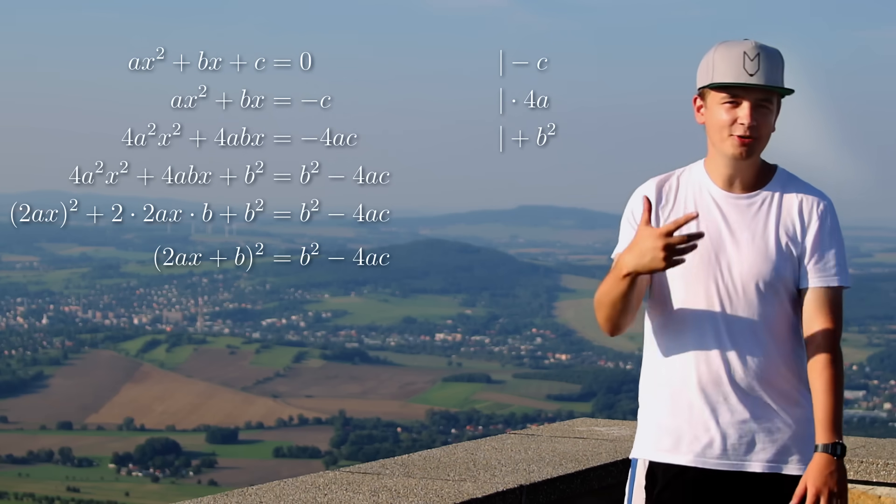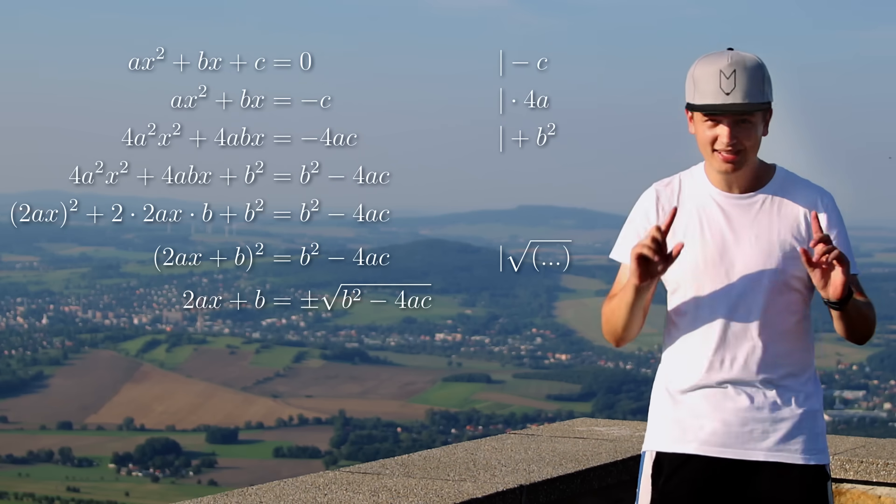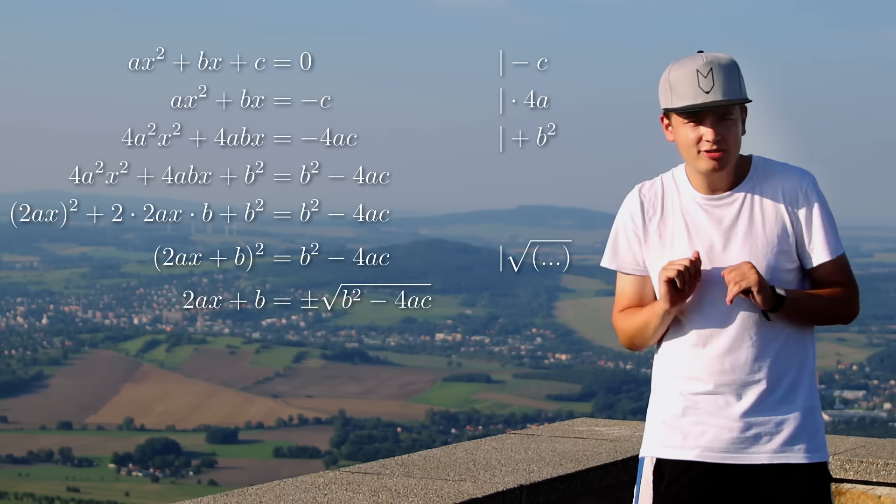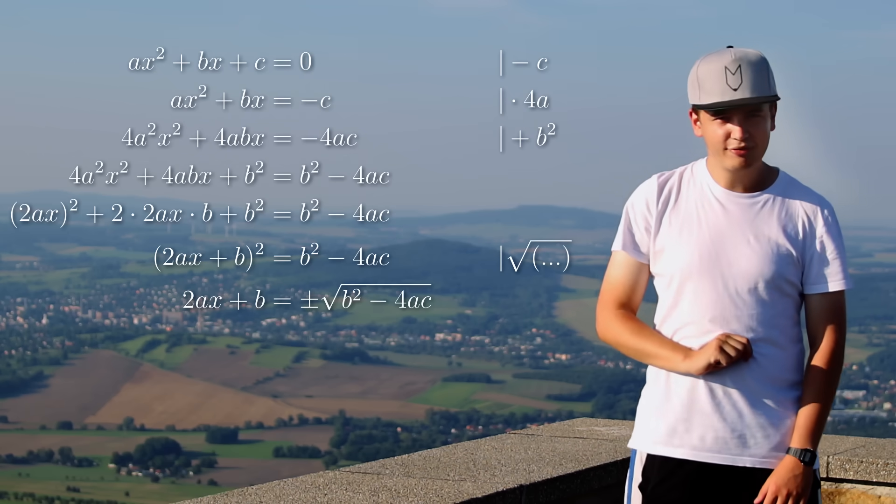So the next step will be to get rid of the square. And if the right side is not negative, the square root must be one solution. But that's an alternative because minus the square root yields the same if you square it. So we write plus minus and now we are at the point where it only takes 2 more steps to solve it for x.